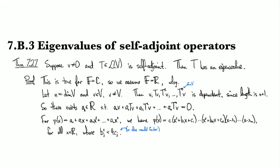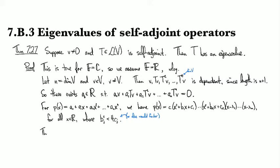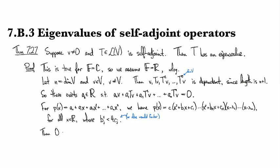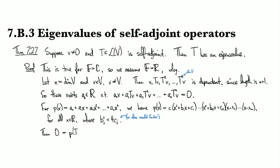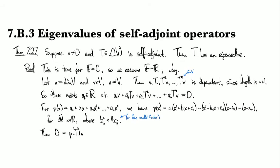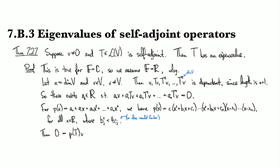So then, if we look at p(T) applied to v, it's supposed to be equal to 0, that's how we cooked this sucker up in the first place.